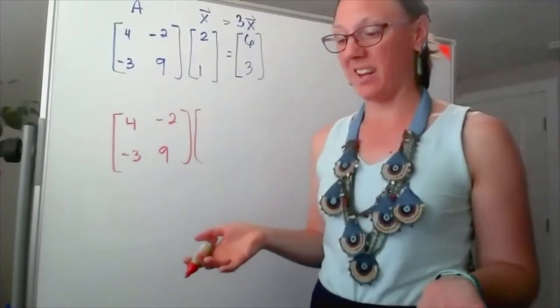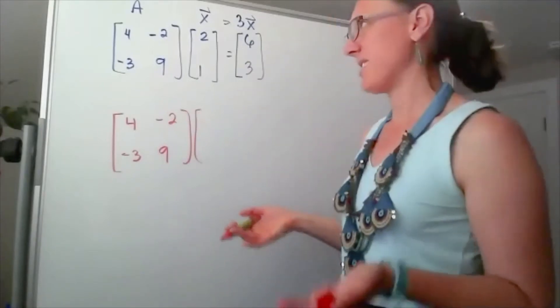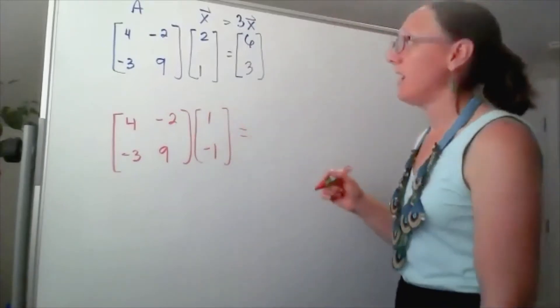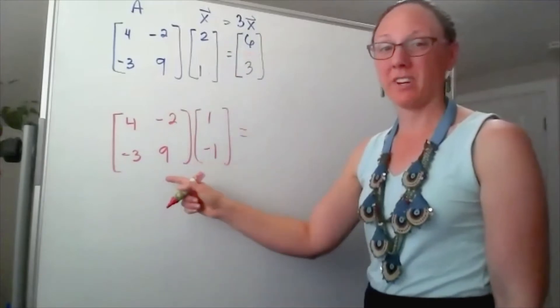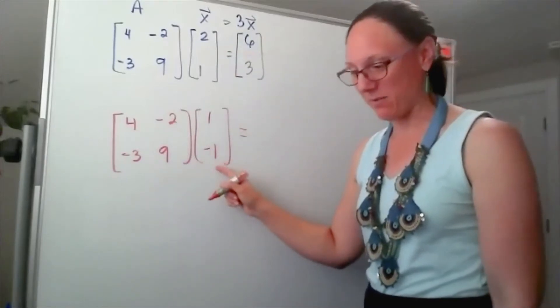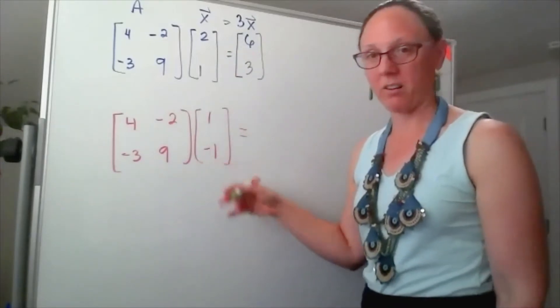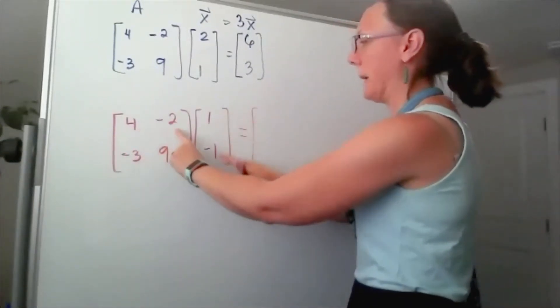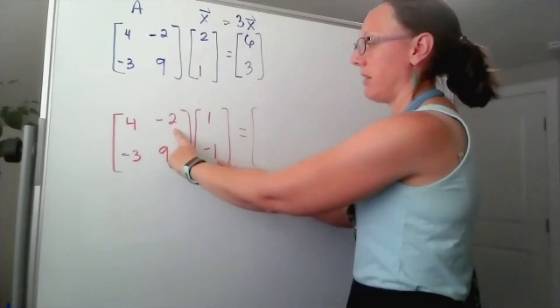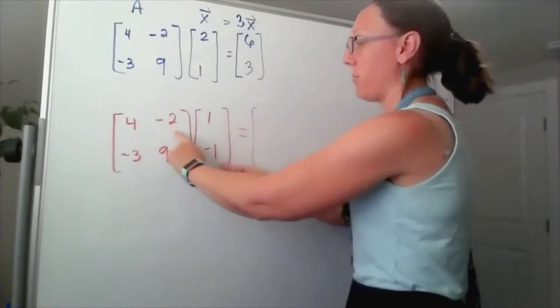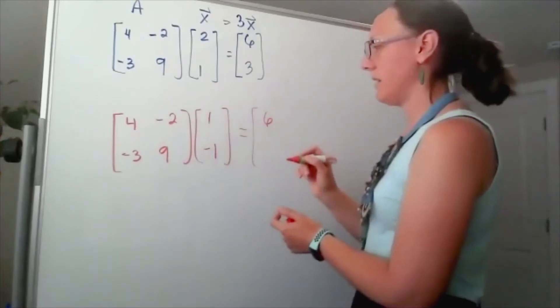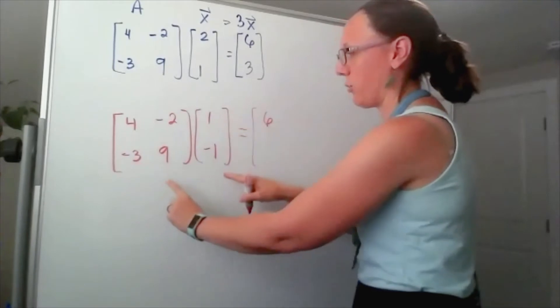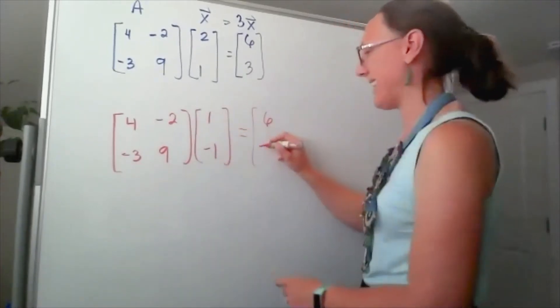almost any other vector at all - let's say [1, -1] - this doesn't happen. This matrix should send this vector somewhere entirely different. So 4 times 1 is 4, plus 2, that's 6. Then -3 times 1 is -3, and -9, so it's -12.